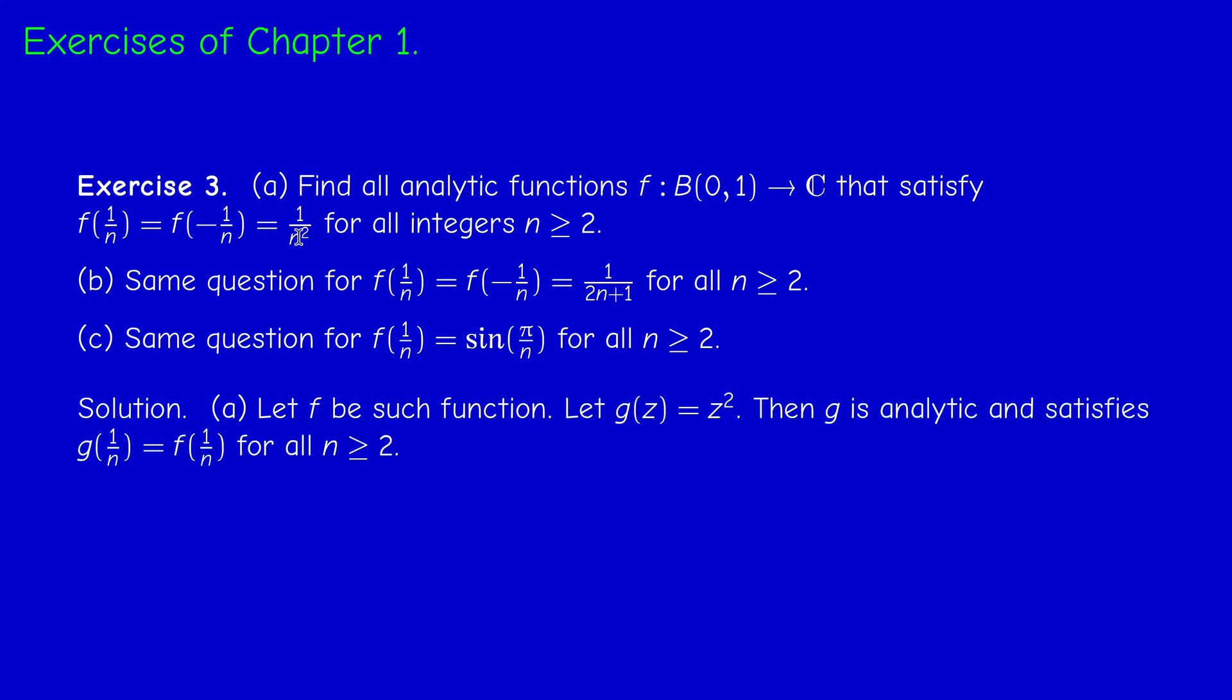So if we call G the square function, then of course G is analytic because G is a polynomial. And we have that G and F, if F is such a function, coincide on the set one-half, one-third, one-over-four, etc., which is a set having zero as a limit point. And zero is inside the unit disk.